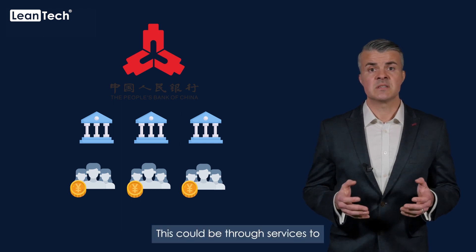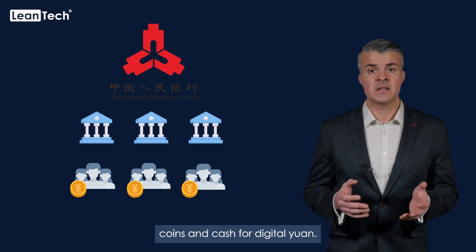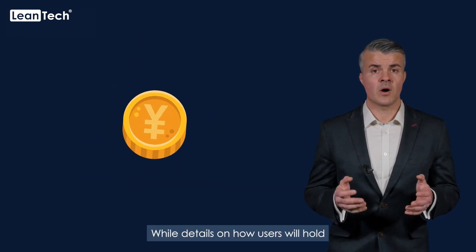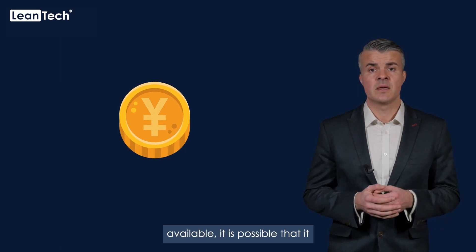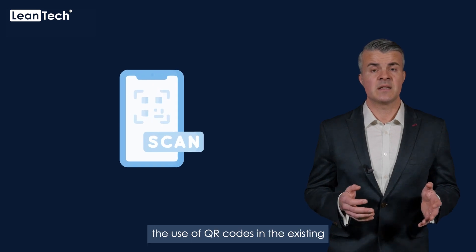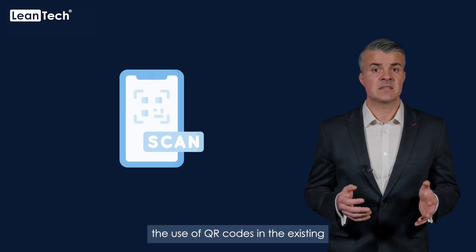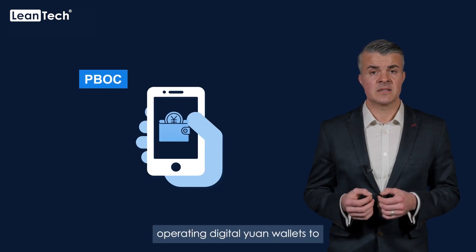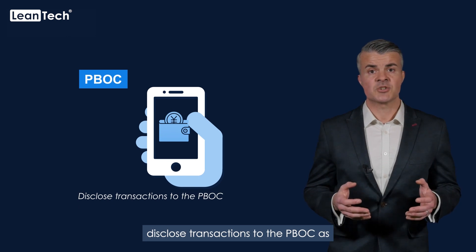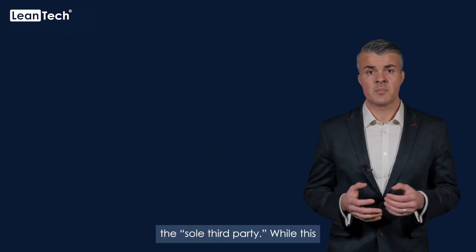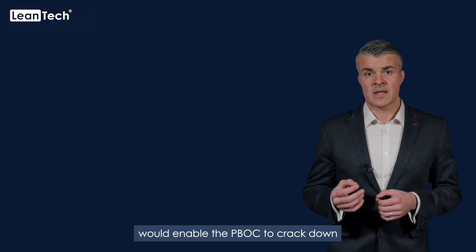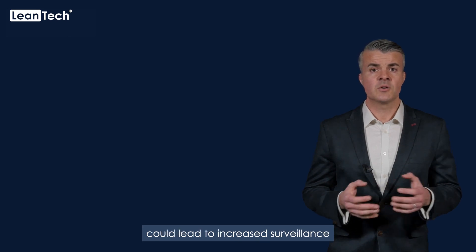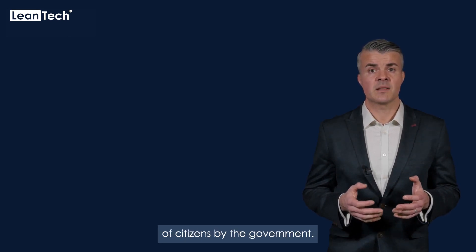This could be through services allowing consumers to exchange their coins and cash for digital yuan. It is possible that it could be used in similar ways to QR codes in existing Alipay and WeChat digital wallets. The PBOC would require those operating digital yuan wallets to disclose transactions to the PBOC as the sole third party. While this would enable the PBOC to crack down on money laundering and criminal offences, critics have warned that it could lead to increased surveillance of citizens by the government.